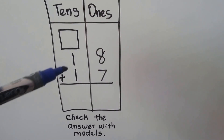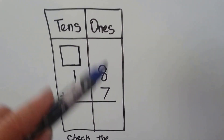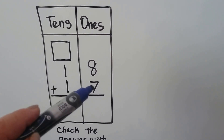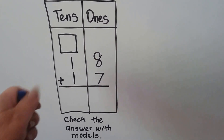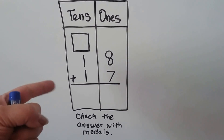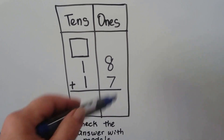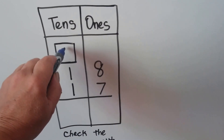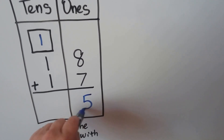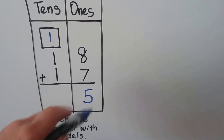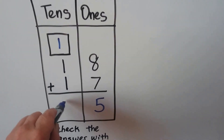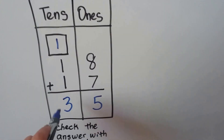Let's try one last one. We want to add 18 plus 17. We start in the ones place with the larger number, the 8, and count on 7: 8, 9, 10, 11, 12, 13, 14, 15. 8 plus 7 is 15. We put the 1 up here from the 15 and the 5 into the sum of the ones place. Now we add these 3 ones and get a 3. We get 35.